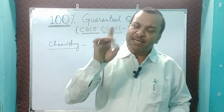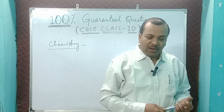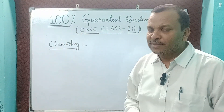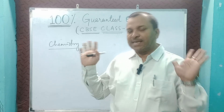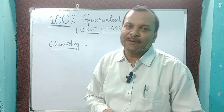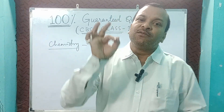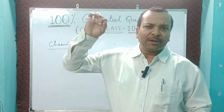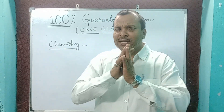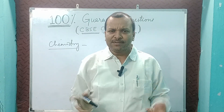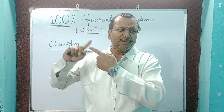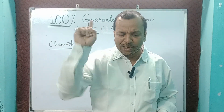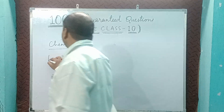You are going to get nomenclature. Reaction of ethanoic acid, esterification — very very very important. Formation of soap and micelles — 110 percent — saponification and esterification, you are going to get one question from that. Next we will come to biology.